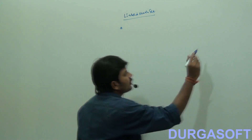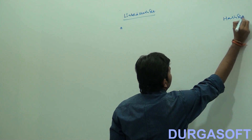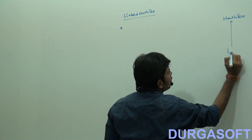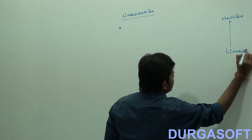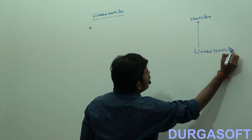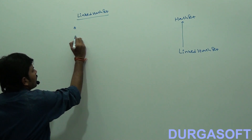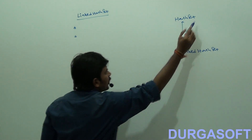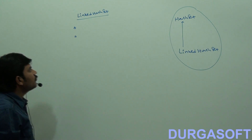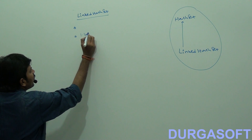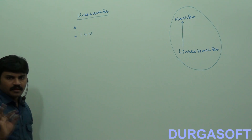LinkedHashSet is the child class of HashSet. In which version did LinkedHashSet come? It was introduced in version 1.4.